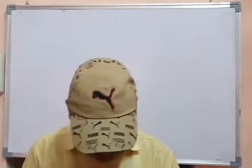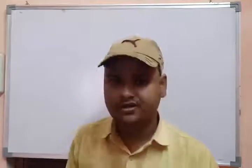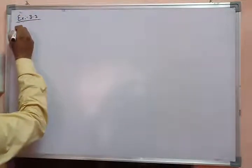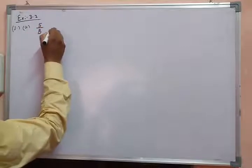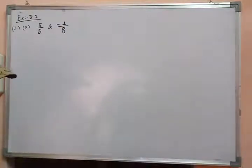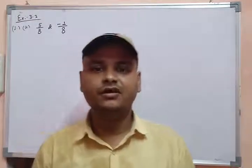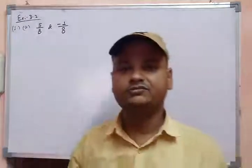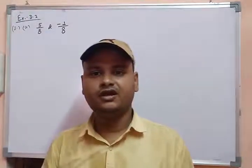In question number 1 of exercise 3.2, you have to add the rational numbers 5 upon 8 and minus 1 upon 8. You should know that these types of questions you have solved in the chapter on fractions. First of all, you have to check that both rational numbers are like rational numbers. If you have like rational numbers, then it is very easy to add them.